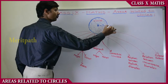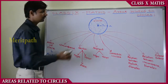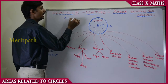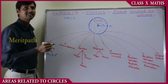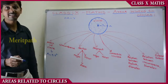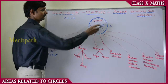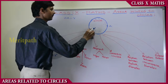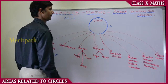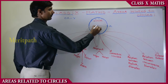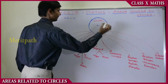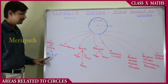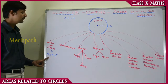Let's take a point A on the circle. So OA is the radius of the circle, where O is the center. Therefore, area A equals pi into r squared. This is the area of the circle.